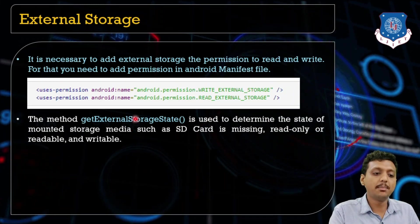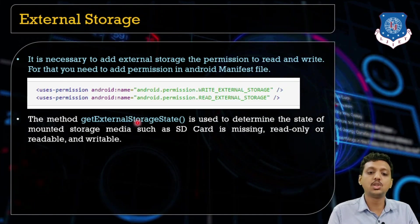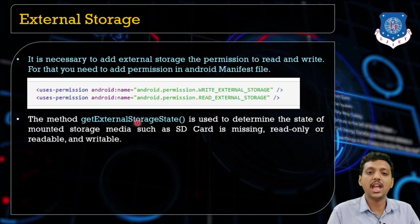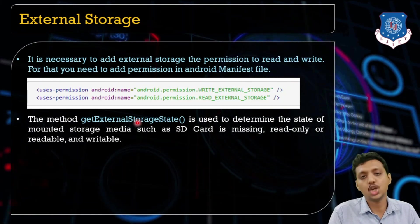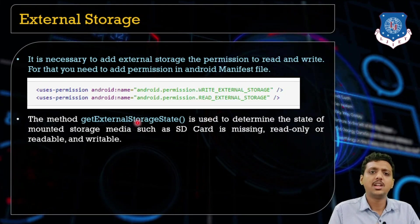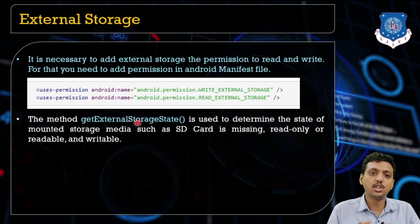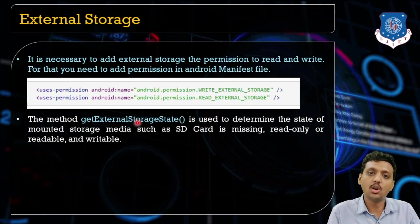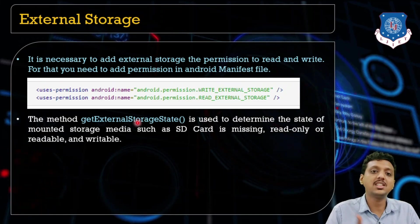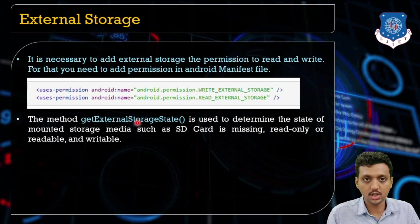The method getExternalStorageState is used to determine the state of the mounted storage media — for example, whether an SD card is missing or not. Note that phones today have 128GB, 64GB, or 32GB of storage, and this is also known as external storage. This method checks whether the SD card is available in your smartphone or not.